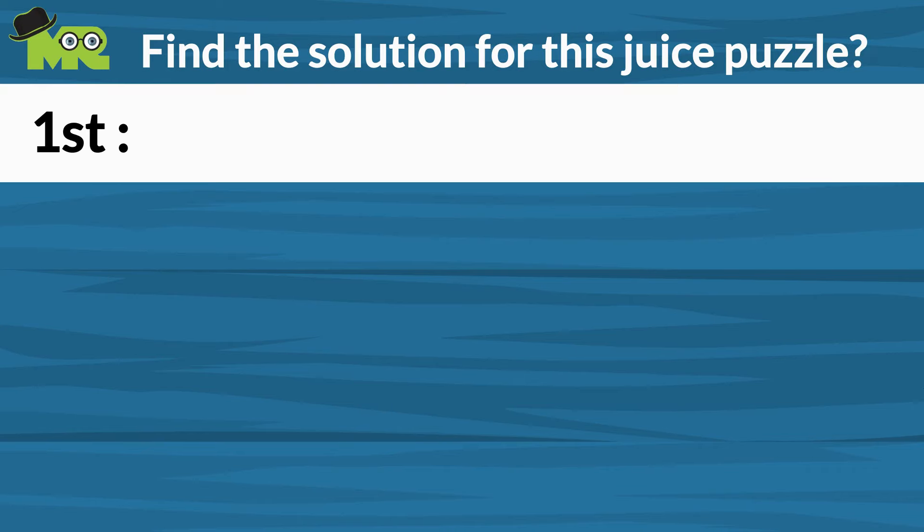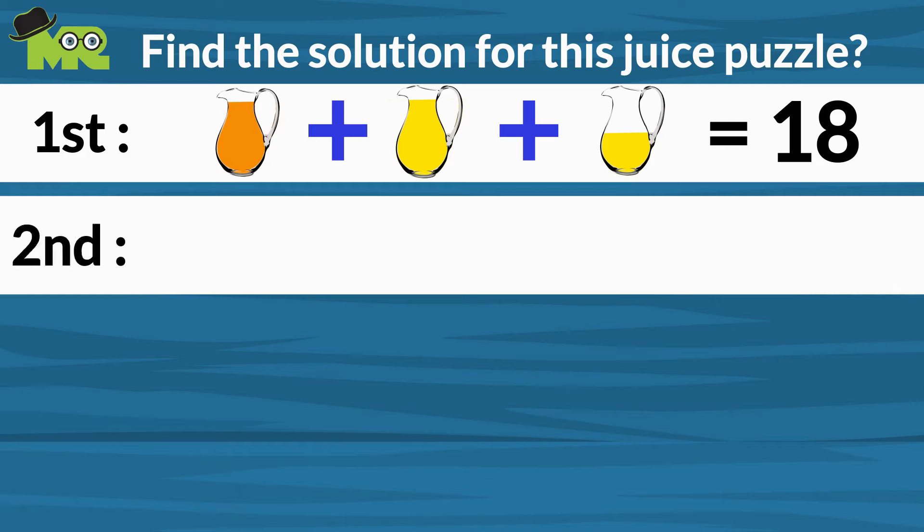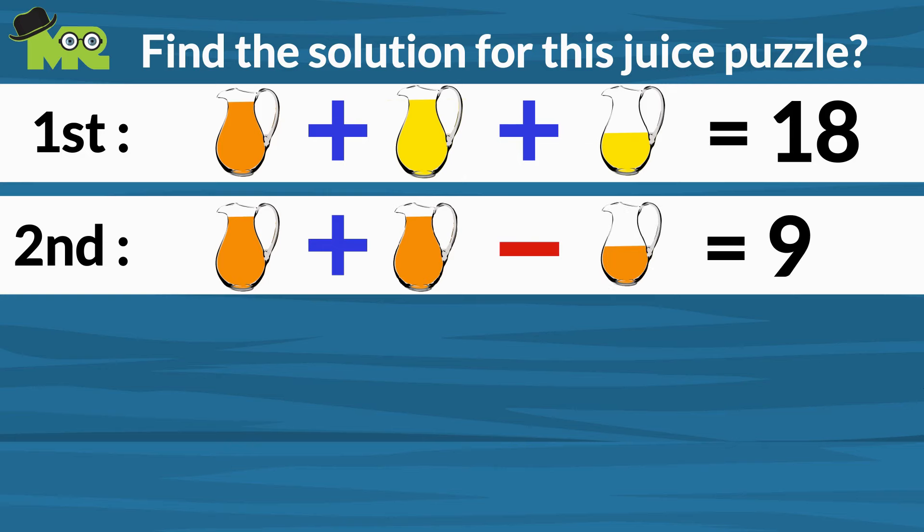In the first equation, there's a jug of orange juice plus a jug of yellow juice plus half a jug of yellow juice is equal to 18. The second equation is a jug of orange juice plus a jug of orange juice minus half a jug of orange juice is equal to 9.